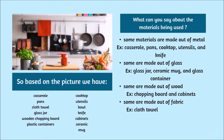So based on the picture that we have, we have casserole, pans, cloth towel, glass jar, wooden chopping board, plastic containers, cooktop, utensils, bowl, knife, cabinet, ceramic, and mug. What can you say about the materials being used?